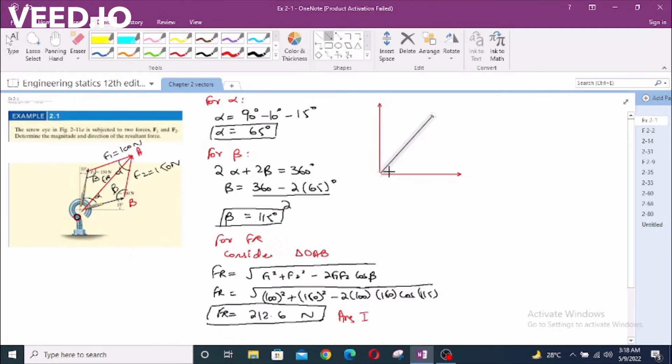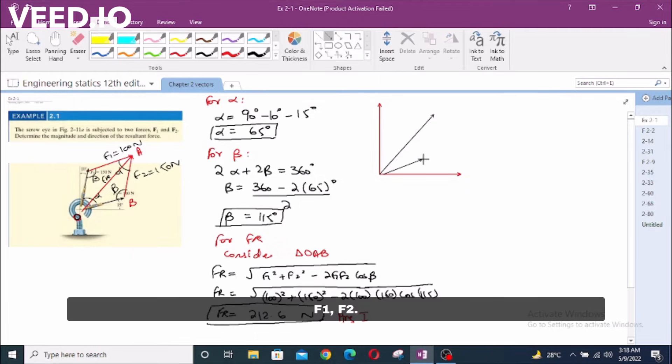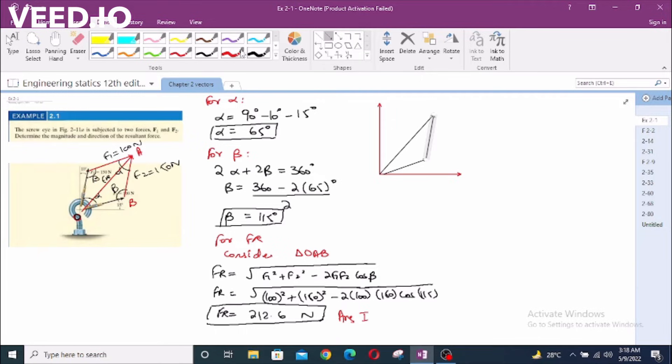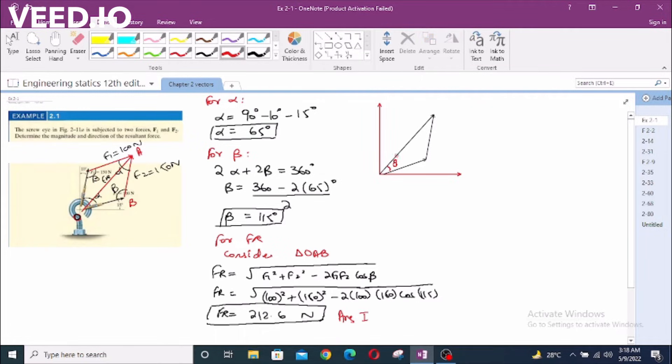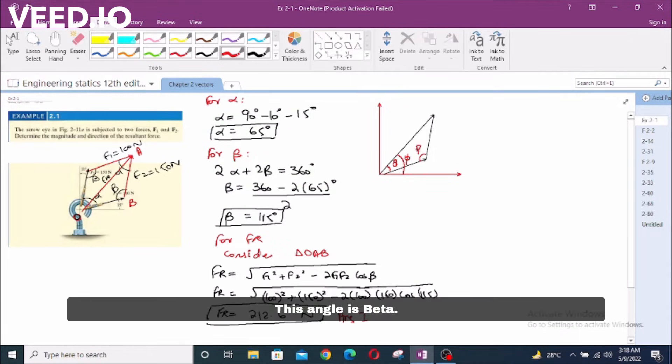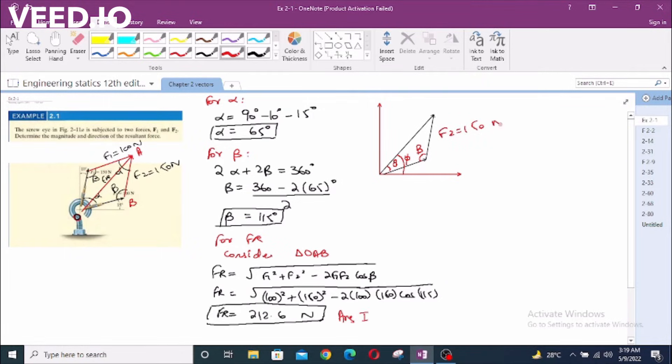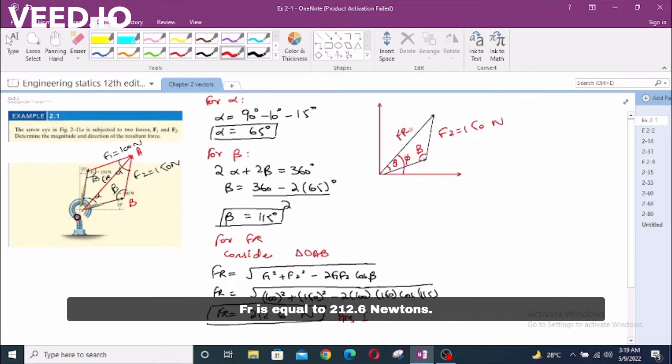This is F1. This is F2. Let's call this angle theta. This angle is phi. This angle is beta. This is F2 which is 150 newtons. FR is equal to 212.6 newtons. F1 is equal to 100 newtons.